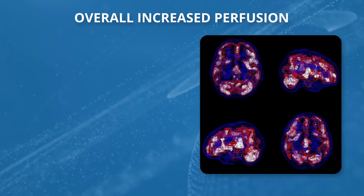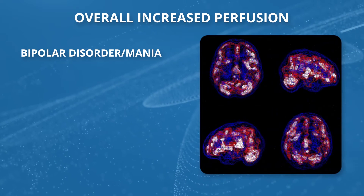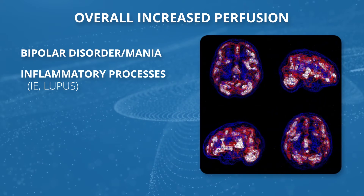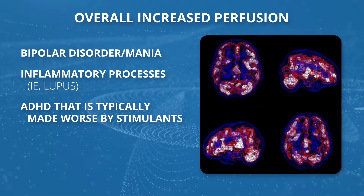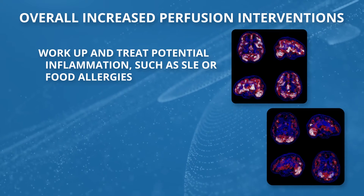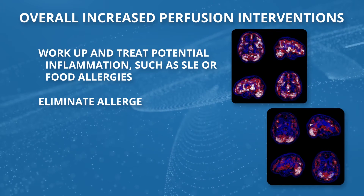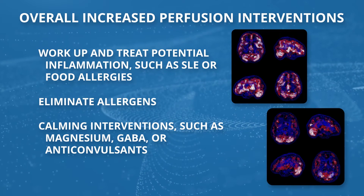Another pattern we see is overall increased perfusion. We often see this in bipolar disorder when people are in manic episodes, during inflammatory processes like lupus or other autoimmune disorders, and in one of the subtypes of ADHD we call the ring of fire. When you see this pattern, you want to work up and treat potential inflammation — such as lupus or even food allergies — eliminate the cause, and then use calming interventions such as GABA or magnesium.